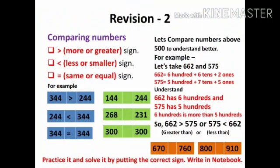Moving further, here you can see revision of comparing numbers by using signs. We can compare numbers as greater, smaller, or equal. For example, 344 is greater than 244, or we can say 244 is smaller than 344, and 344 is equal to 344.